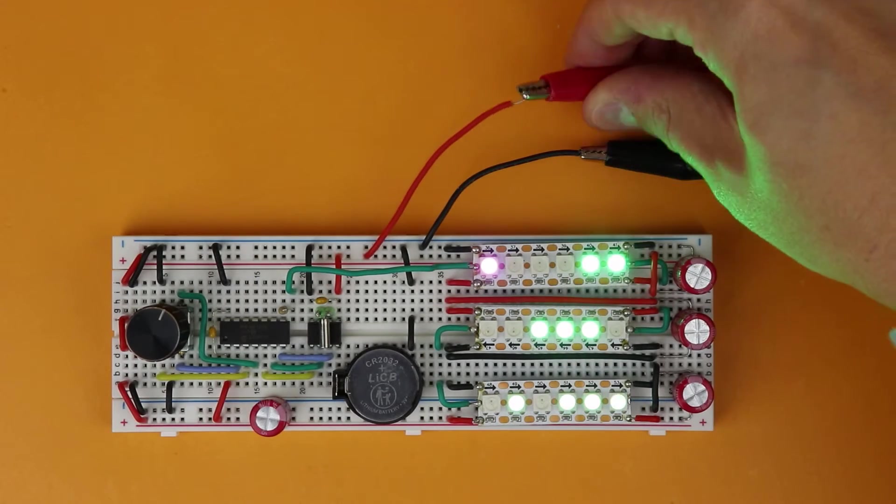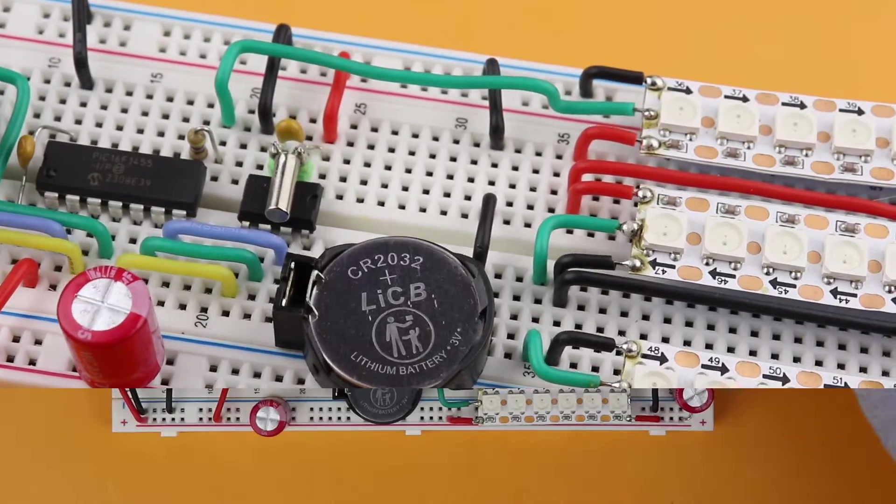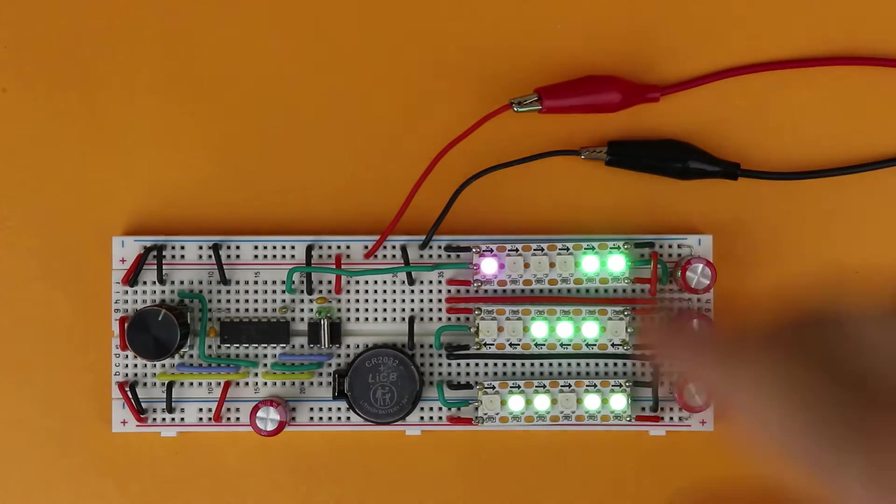And when the power goes out like this, the clock uses a built-in battery so that when the power comes back on again later, the time is still correct.